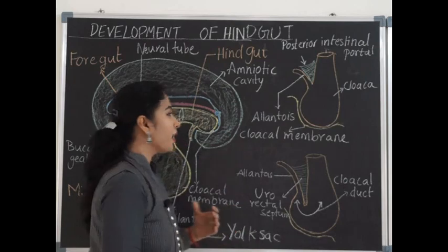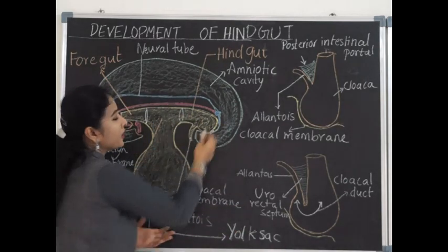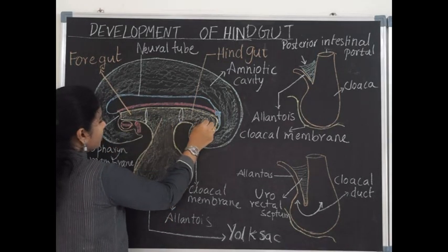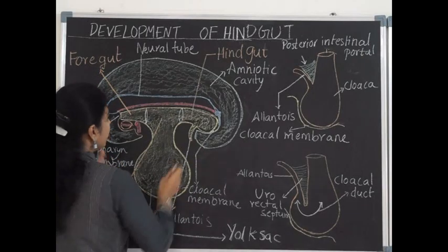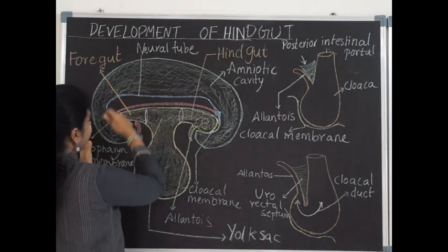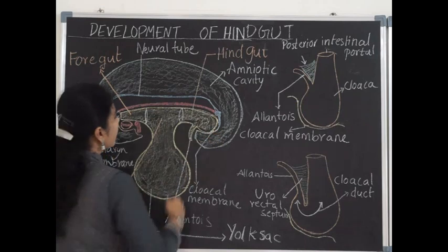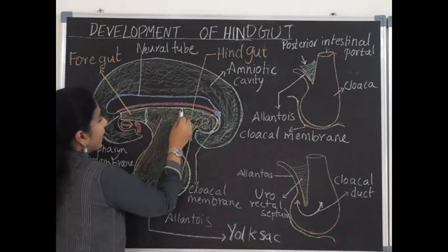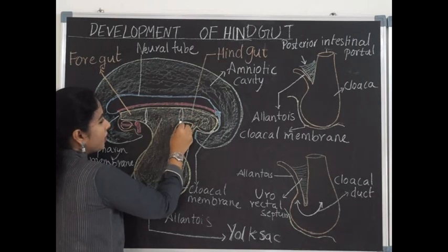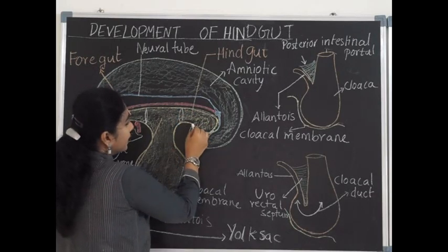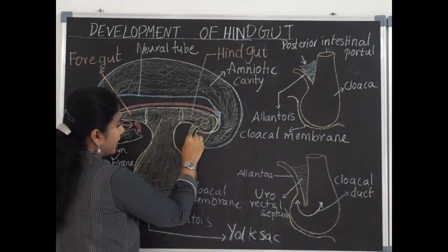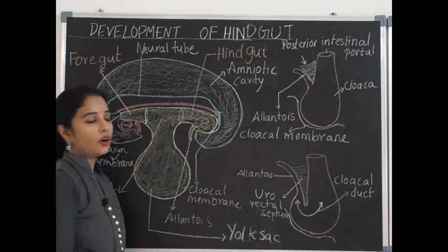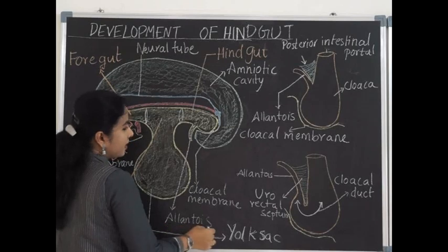The hindgut is that part of the gut which is present within the tail fold of the embryo. The absorbed part of the yolk sac present within the embryo is absorbed because of the head fold, tail fold, and two lateral folds. The posterior part of the absorbed yolk sac is called the hindgut, and it communicates with the midgut at the posterior intestinal portal. There is a diverticulum which arises ventrally in the hindgut and runs along in the umbilical cord. This diverticulum is called the allantois.